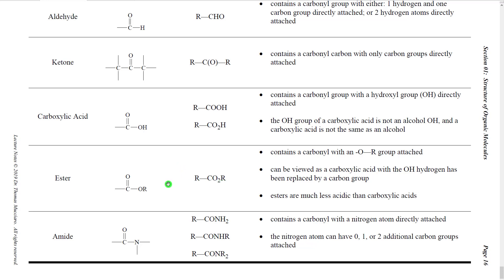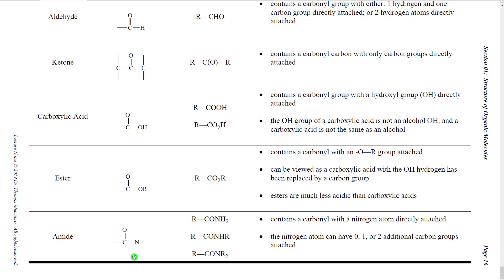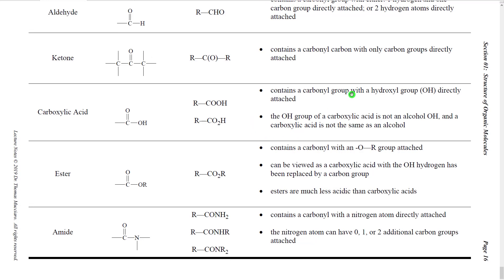The last functional group for this semester is the amide — a carbonyl with a nitrogen directly attached. That nitrogen can have two hydrogens, one carbon group and one hydrogen, or two carbon groups. We'll talk more about carbonyl functional groups in second semester, but they will also appear at the end of first semester. That concludes the lecture material for section one.